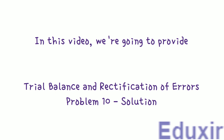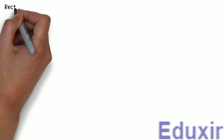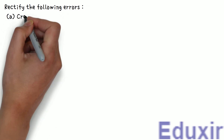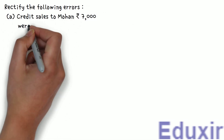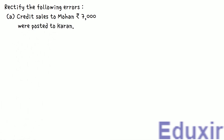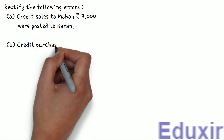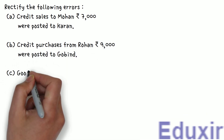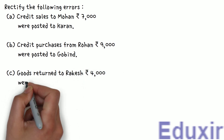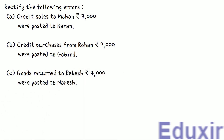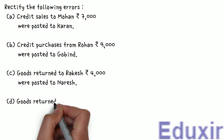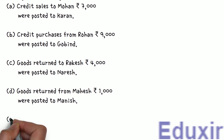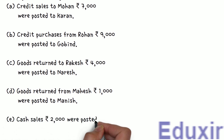The problem statement is as follows. Rectify the following errors. A: Credit sales to Mohan, Rs. 7,000 were posted to Karan. B: Credit purchase from Rohan, Rs. 9,000 were posted to Gobind. C: Goods returned to Rakesh, Rs. 4,000 were posted to Naresh. D: Goods returned from Mahesh, Rs. 1,000 were posted to Manish. E: Cash sales, Rs. 2,000 were posted to Commission Account.